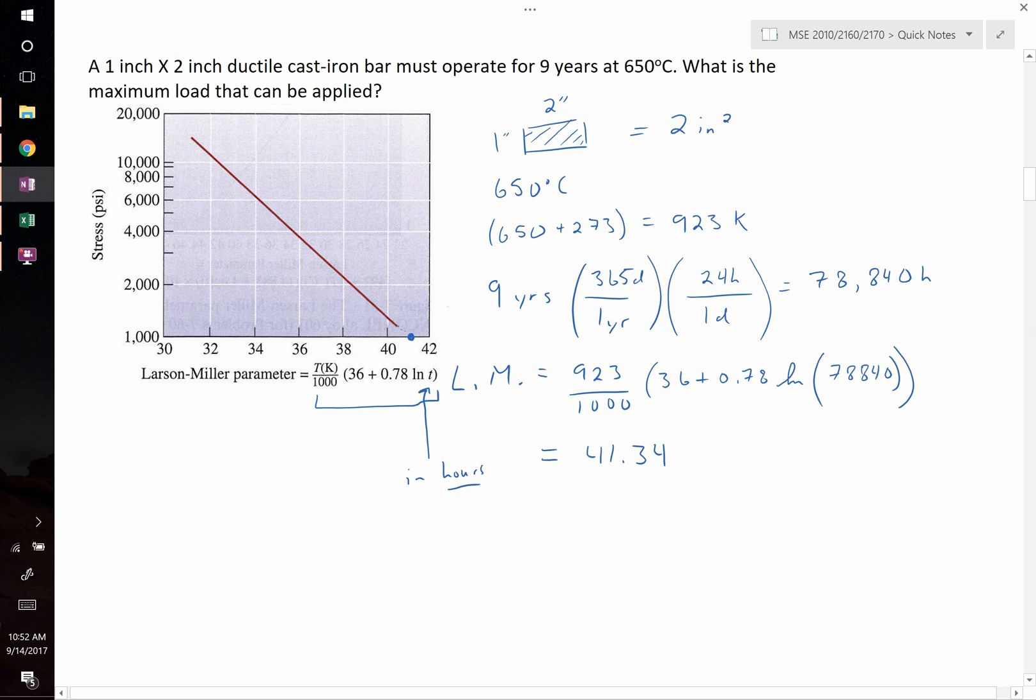With the accuracy shown in this plot, it looks like the maximum stress that we'd be able to withstand is 1000 psi. So 1000 pounds per square inch equals our stress.